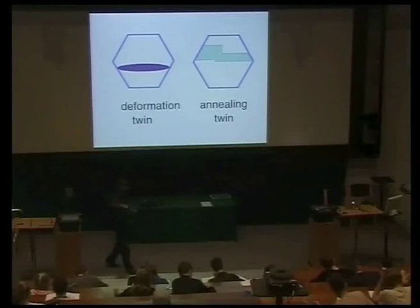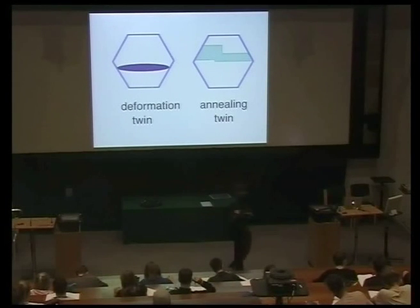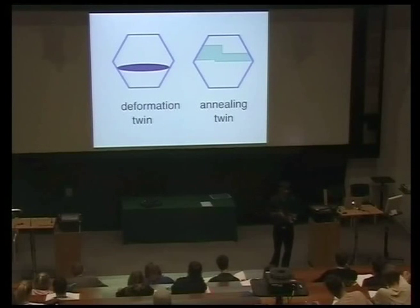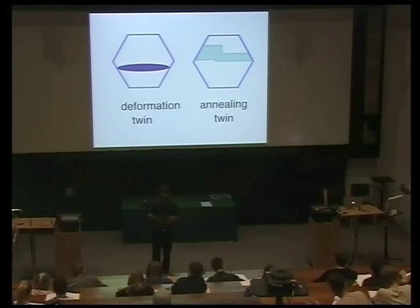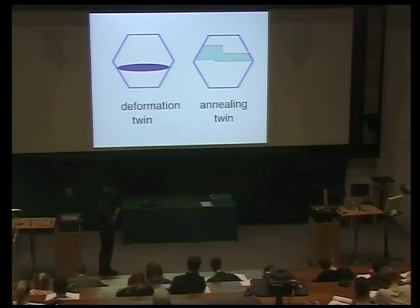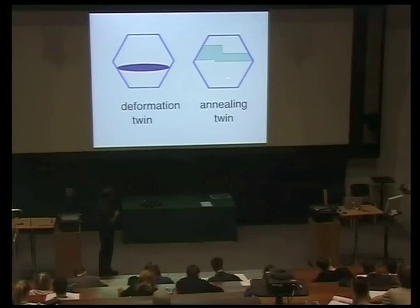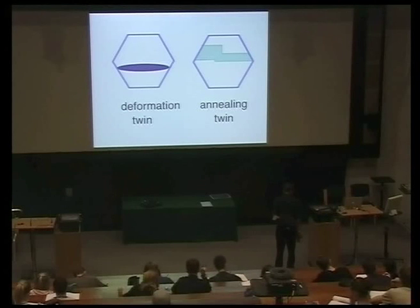The twin plane itself has perfect coherency because it's the same plane — we are just changing the stacking sequence above it. So the twin interface will have a very low energy. If you grow a crystal which happens to be in twin orientation with another crystal — not by mechanical deformation but by assembling atoms with diffusion — then there is no strain energy, and the twin doesn't have to have sharp ends. It will look like a region with low interfacial energy but without sharp tips. Those are known as annealing twins, and they do not have any deformation associated with them.